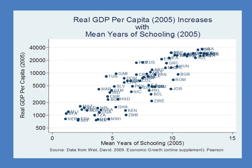Our second bit of data looks at real GDP per capita against the average years of schooling. Again, we see a pretty close, tight relationship: more years of schooling, more human capital, greater GDP per capita. Of course, the causality could be going the other way — perhaps it's just in rich countries that people have more schooling. Nevertheless, the basic facts are consistent with the Solow model.